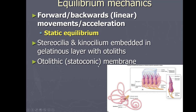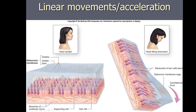When you tilt your head forward, that gelatinous layer slides a little bit, bending the kinocilium and stereocilia on the hair cells. That stimulates the hair cells to generate action potentials which go to the brain, telling it that your head is tilting. To recap: you get a layer of hair cells called the macula, on top of which is the statoconic membrane — a gelatinous layer filled with otoliths.